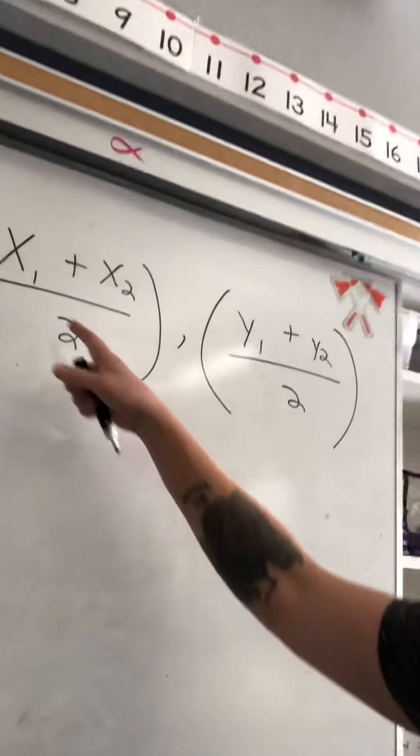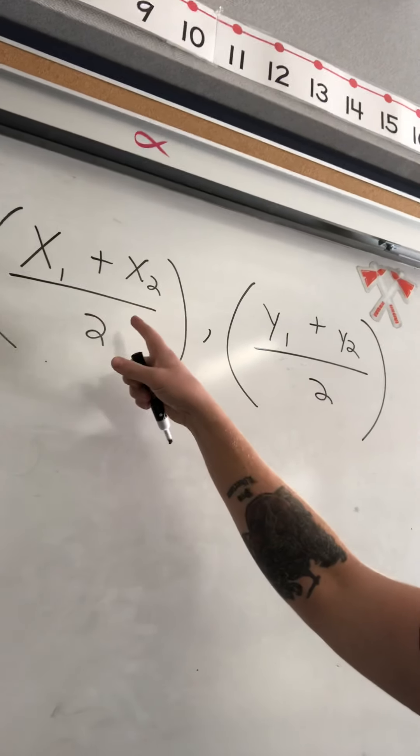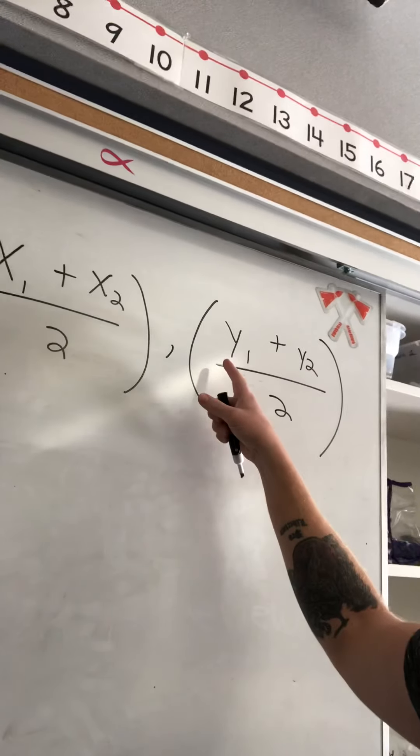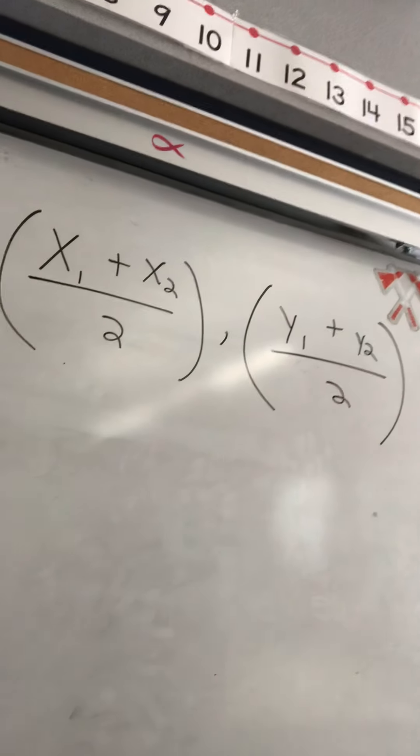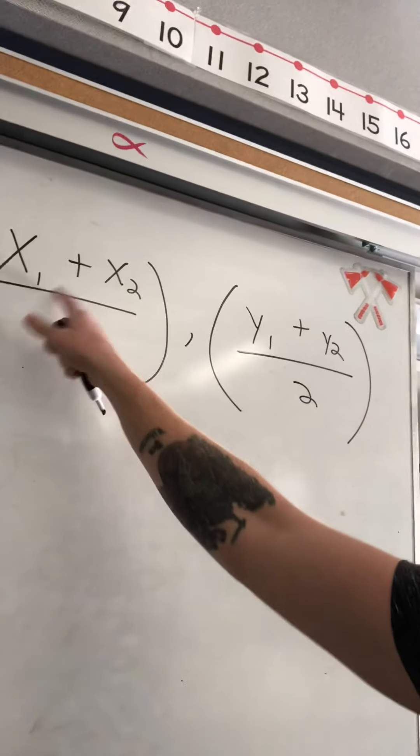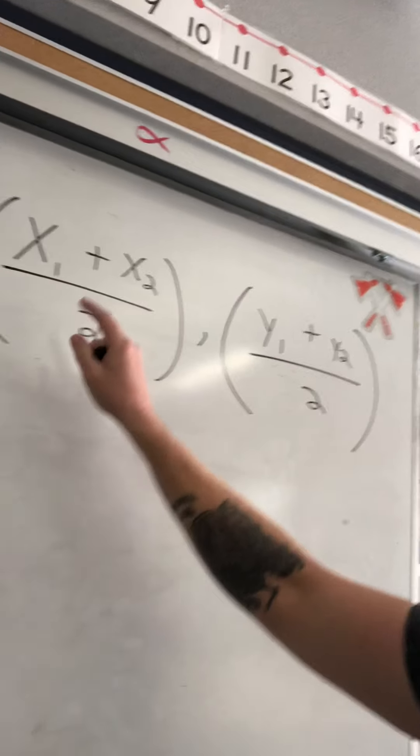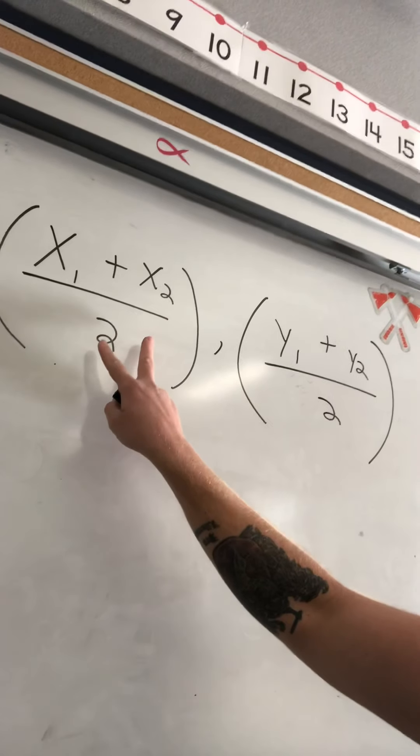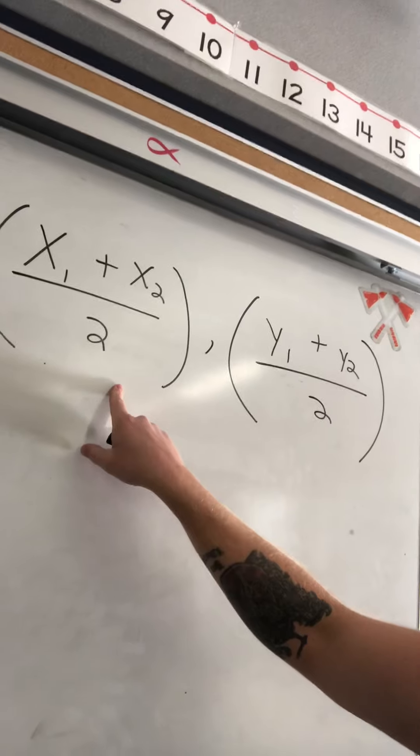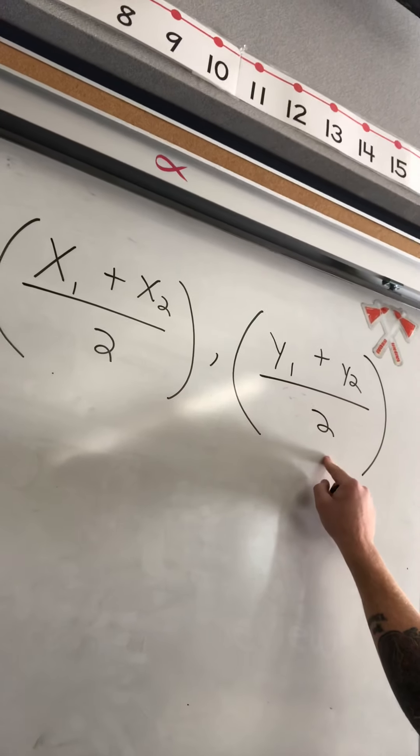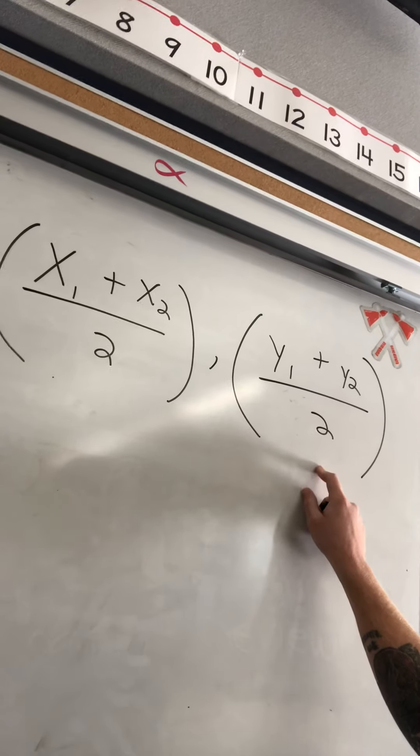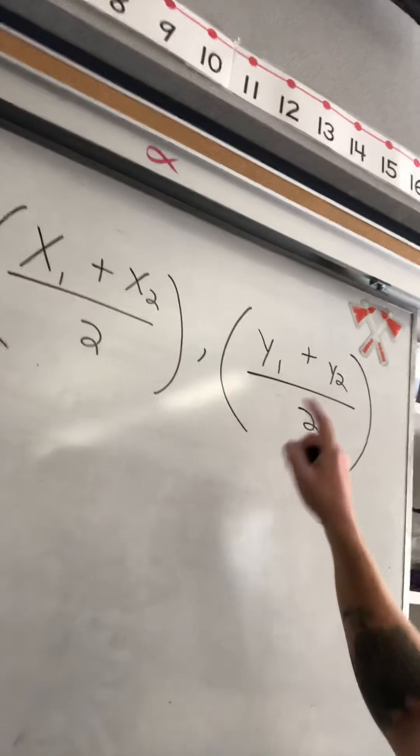Don't let the ones and twos bother you. They're just telling you, hey, use the first X, use the second X, use the first Y, use the second Y. This is where a lot of people get confused. A lot of people will add the X and the Y. Don't do that. Take the two X's, add them together, and then divide by 2. Take the two Y's, add them together, divide by 2. Okay? The X's go together, the Y's go together.